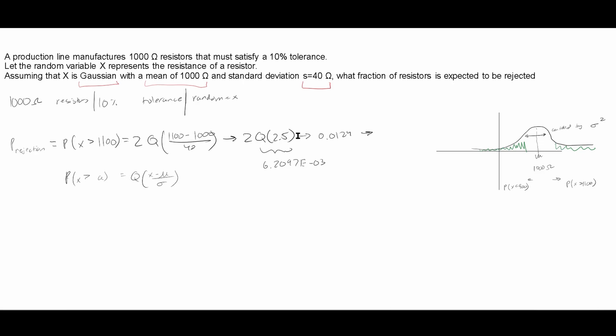Now, if we want it in percentage, it says what fraction of resistors is expected to be rejected. This would actually be the fraction right here in decimal form. But this would be 1.24%. The fraction of it is just going to be 124 divided by, if we move the decimal places over, so we'll do 1, 2, 3, 4,